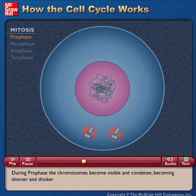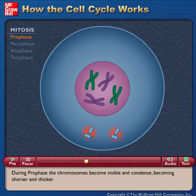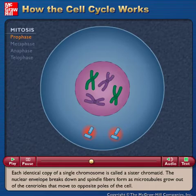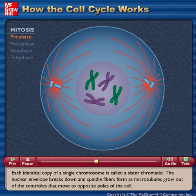During prophase, the chromosomes become visible and condense, becoming shorter and thicker. Each identical copy of a single chromosome is called a sister chromatid. The nuclear envelope breaks down and spindle fibers form as microtubules grow out of the centrioles that move to opposite poles of the cell.